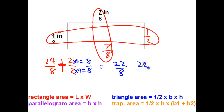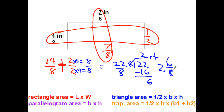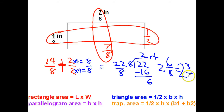Dividing out: 22 eighths — 8 goes in twice giving 16, remainder 6 — so two and six-eighths. Since both 6 and 8 are even, I divide both by 2: six divided by 2 is 3, eight divided by 2 is 4 — giving two and three-fourths inches for the perimeter.